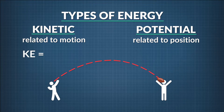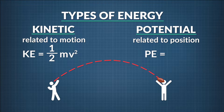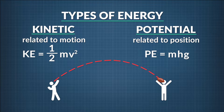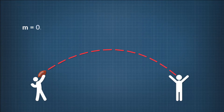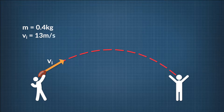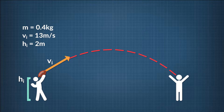The kinetic energy of an object equals one-half the object's mass times its velocity squared. An object's potential energy, when that stored energy is created by the force of gravity, equals its mass M times its height above ground H times G, the acceleration due to gravity. Now back to our example problem. The football has a mass of 0.4 kilograms, and is thrown with an initial velocity of 13 meters per second and a height of 2 meters above the ground. Assuming energy is conserved without any loss to air resistance, how fast is the football going when it's 10 meters off the ground?